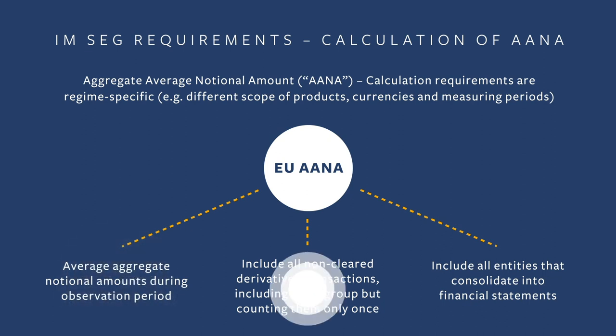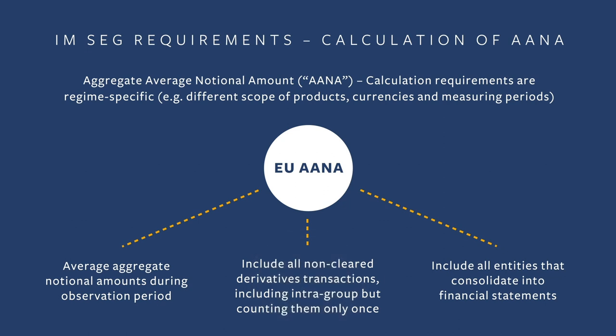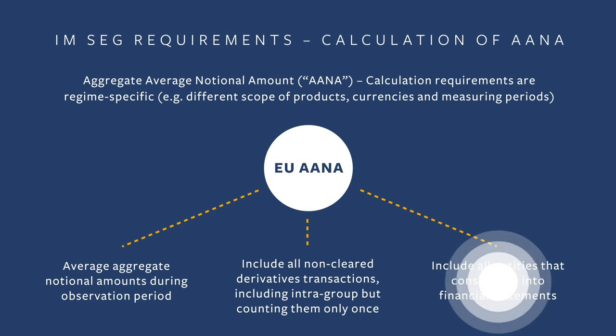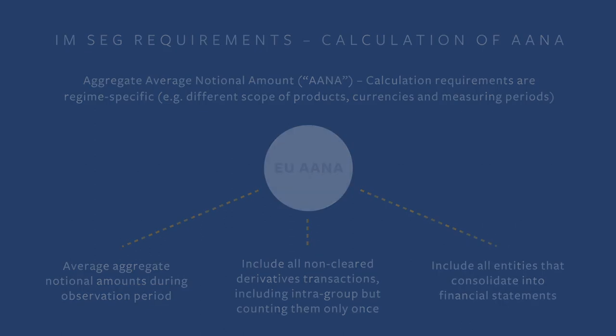Covered derivatives include all non-cleared derivative transactions including intra-group transactions, counting these only once. Generally speaking, the calculation captures all entities which consolidate into financial statements. The calculation is complicated by moving exchange rates and applicable thresholds applying in different currencies depending on the applicable regime — for example, United States dollars for Dodd-Frank and Euros for EMIR.